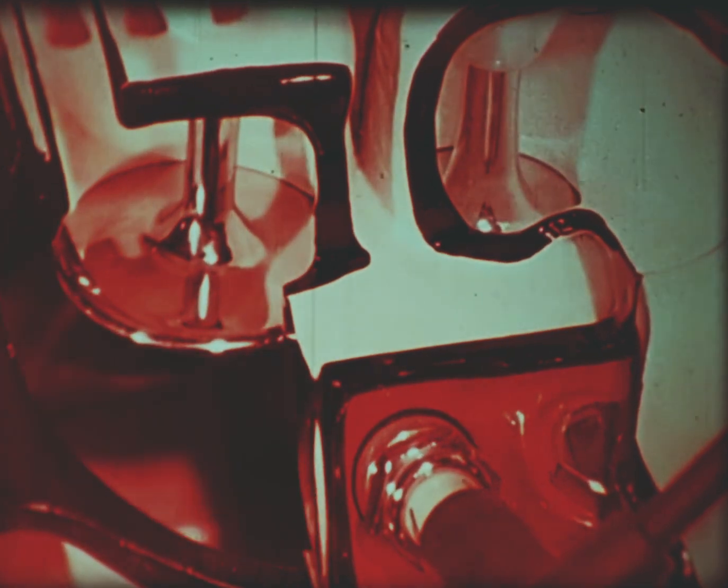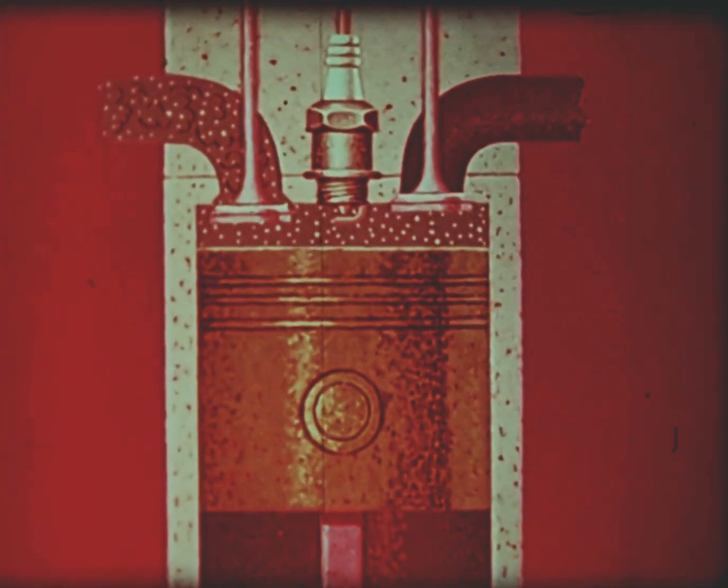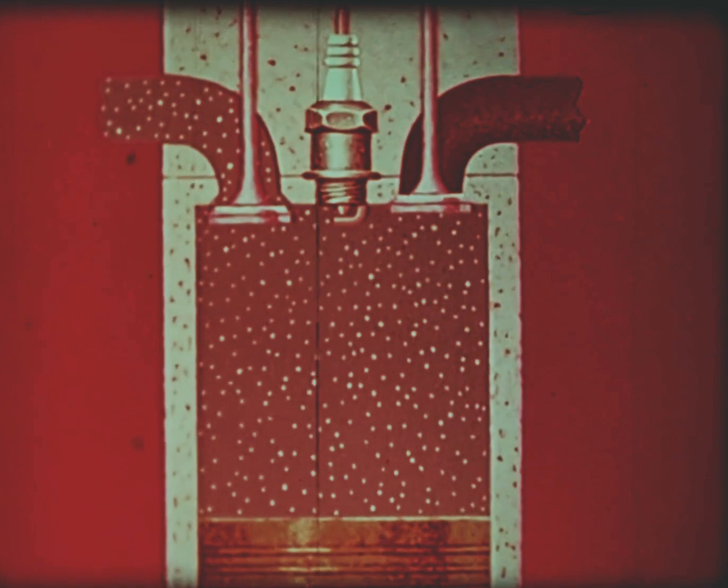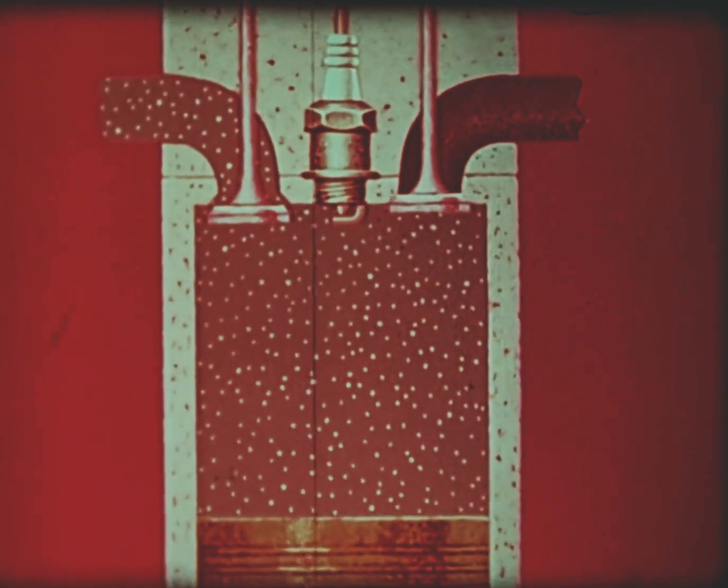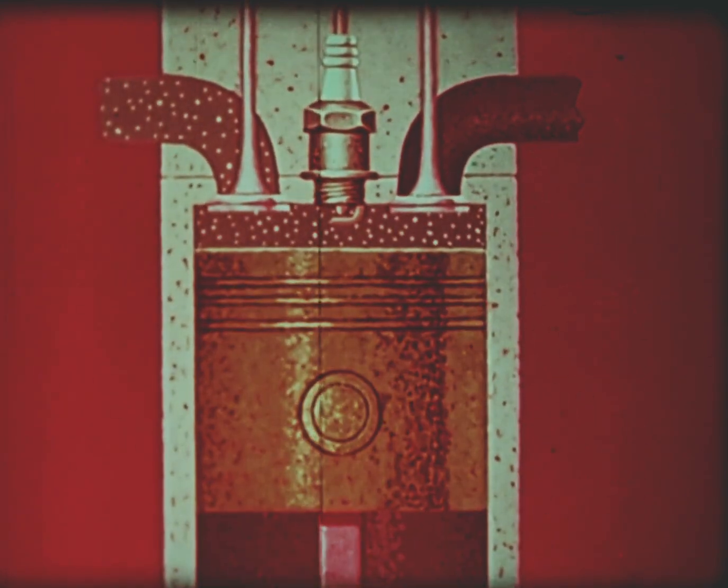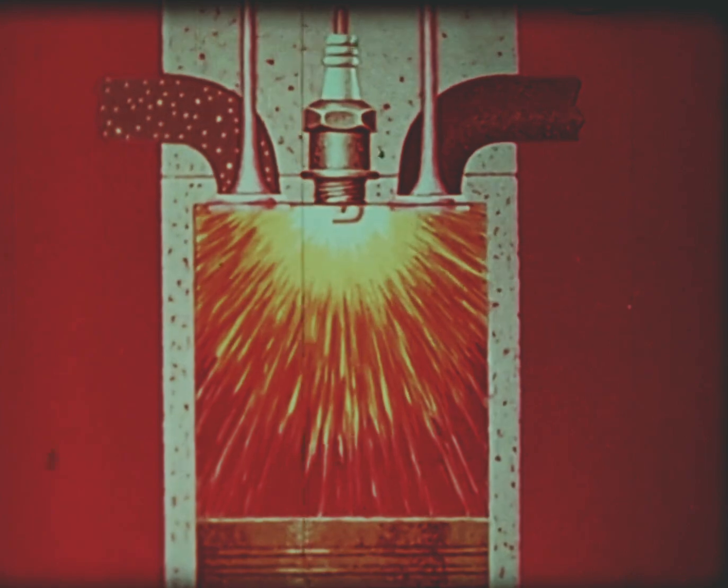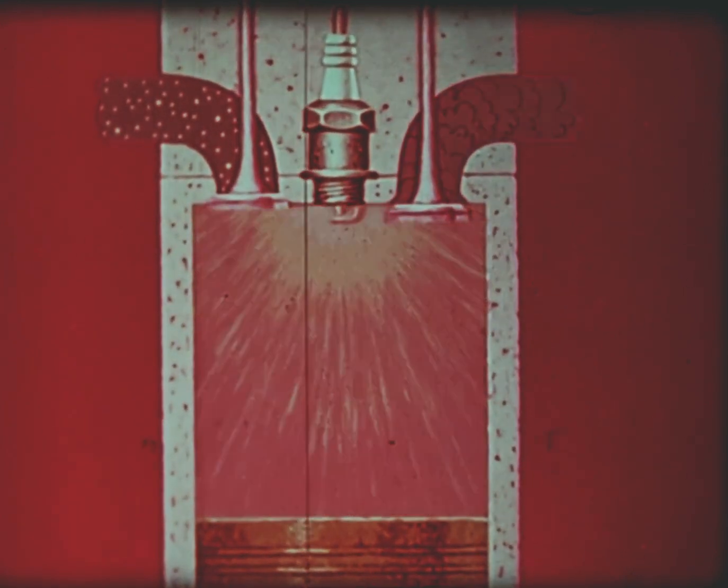The intake valve opens to let the fuel and air mixture in as I start the intake stroke. The valve closes for compression and stays closed during the power stroke. The exhaust valve opens about the time the power stroke ends, so that I can drive out the burned gases during the exhaust stroke.